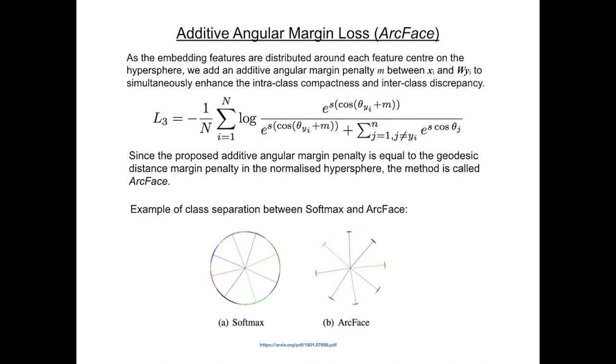The embedding features are distributed around the feature center of the hypersphere, so we can add an additive angular margin M between each weight and feature and enhance the separation and compactness between classes.